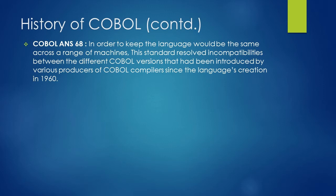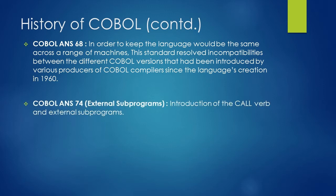Moving to the next standard — COBOL ANS-1974 — in this standard the introduction of the COBOL CALL verb and external subprogram was done. Before this standard, there was no real way to partition a program into separate parts, and this resulted in huge monolithic programs. The 1974 standard had saved COBOL from a bad reputation.